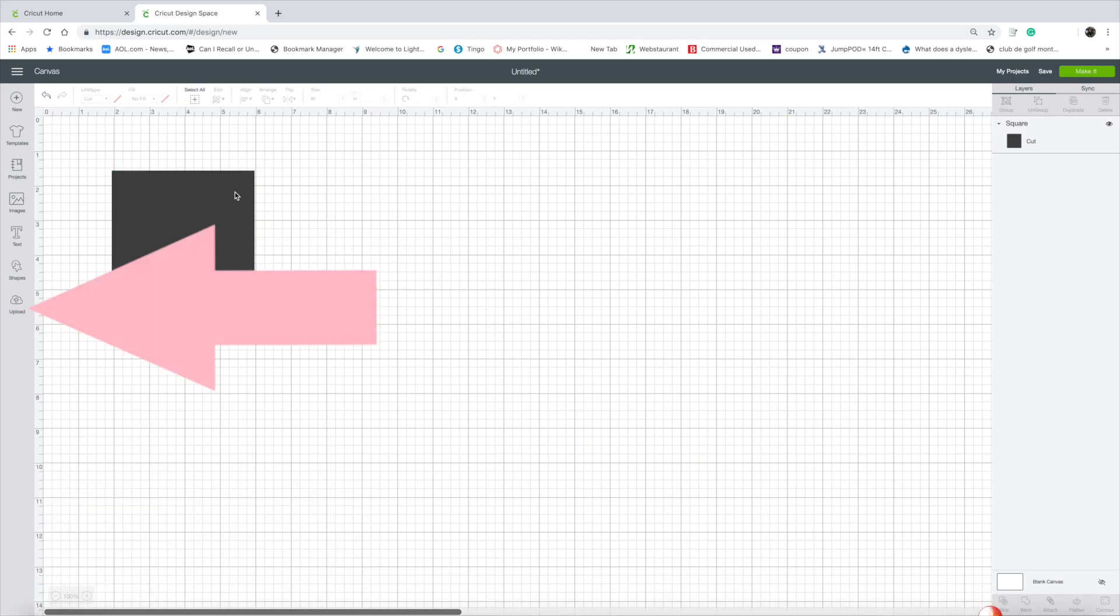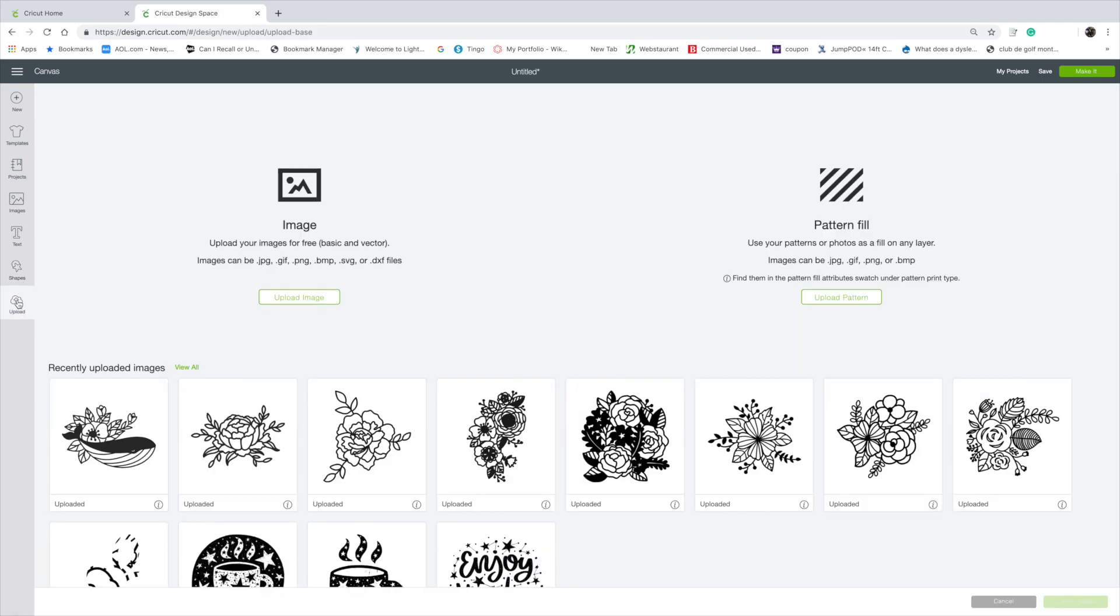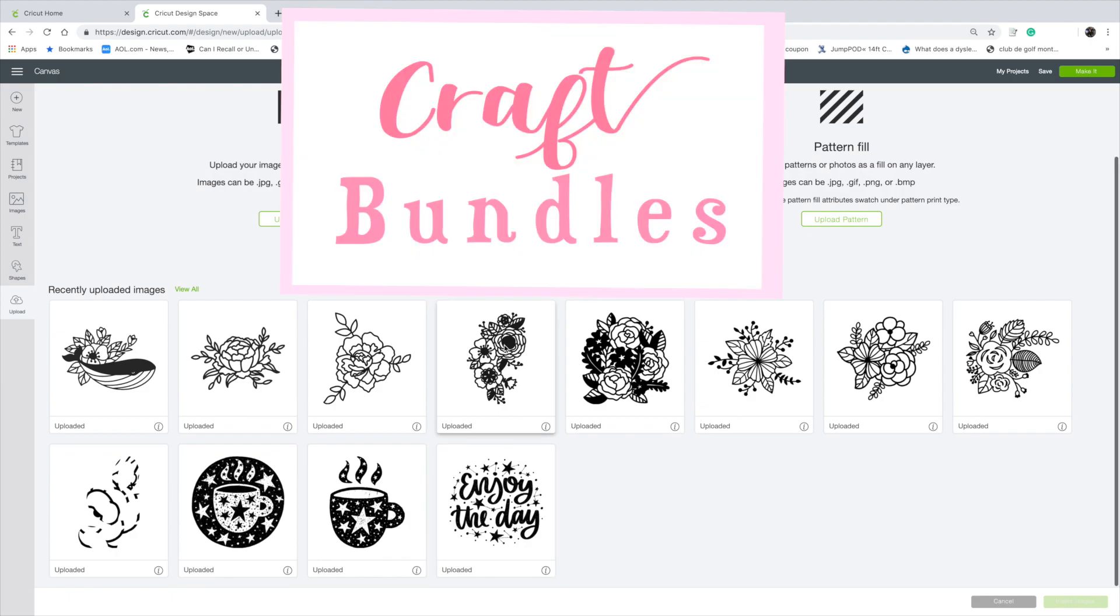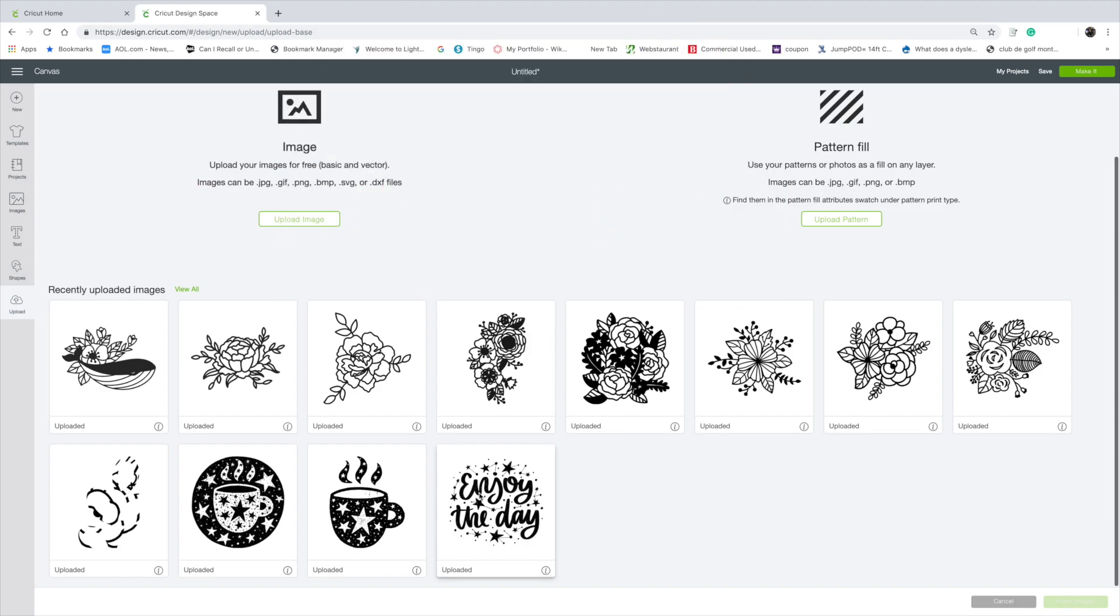To access your image, select upload. After you upload the image you want to put on the tile, it should show up here. All of the images shown here are from craft bundles. I have a video teaching you how to download files from craft bundles to Cricut Design Space that I'll link in the description box if you want to check it out.